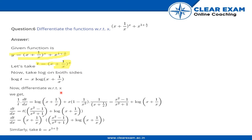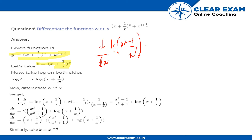Now differentiating with respect to x on both sides: d/dx of log t gives (1/t)·(dt/dx). Applying the product rule, we get log(x + 1/x)·d/dx(x) which is 1, plus x times d/dx of log(x + 1/x), which equals (1/(x + 1/x))·d/dx(x + 1/x), giving (1 - 1/x²).